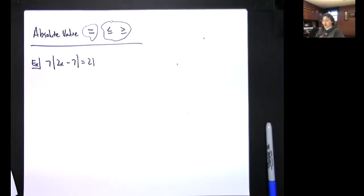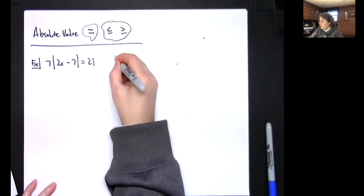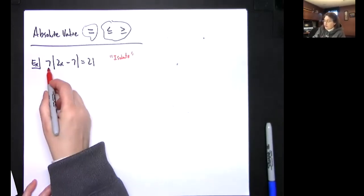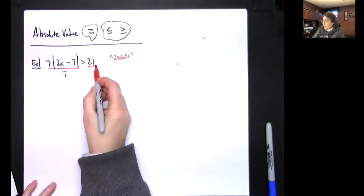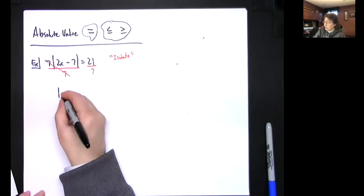The key thing here is the isolate part. This absolute value has to be isolated. So isolate first. Divide by 7 and divide by 7.